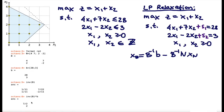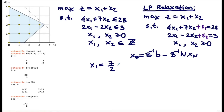From the simplex tableau data, x1 equals 7/2 (the B⁻¹b component for x1), and the B⁻¹N part is taken from the first row of B⁻¹. Since N is the identity matrix, B⁻¹N equals B⁻¹. The non-basic variables at the optimal solution are s1 and s2, giving the coefficient for s1 and the coefficient for s2. As a result, we have x1 = 7/2 − (1/11)s1 − (7/22)s2.